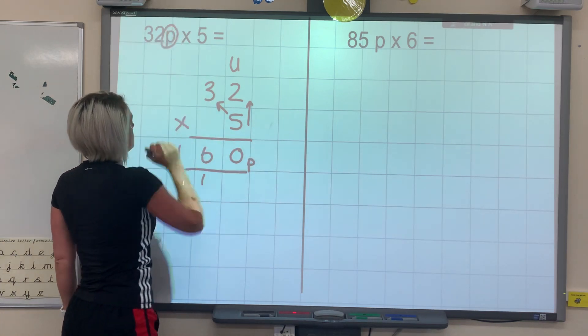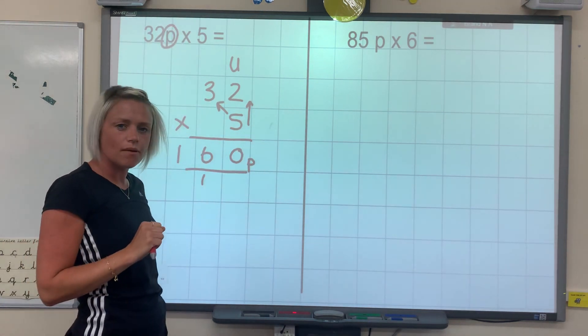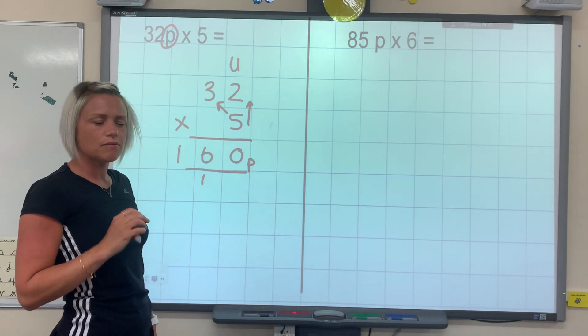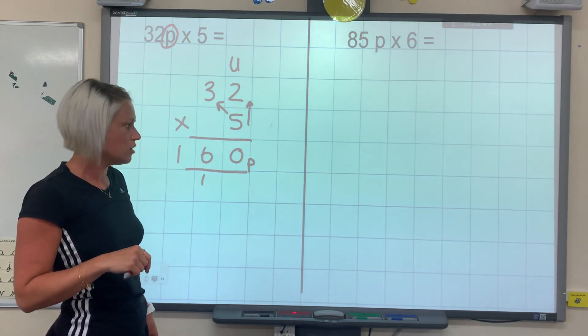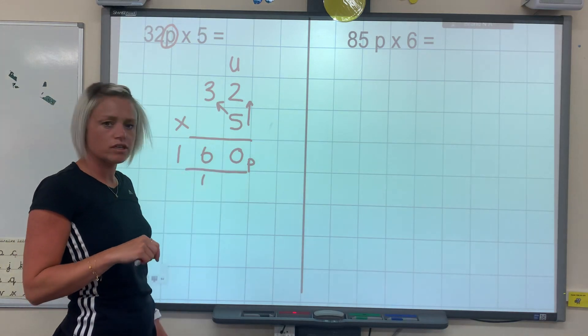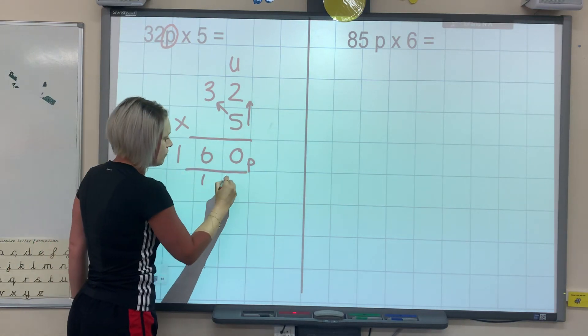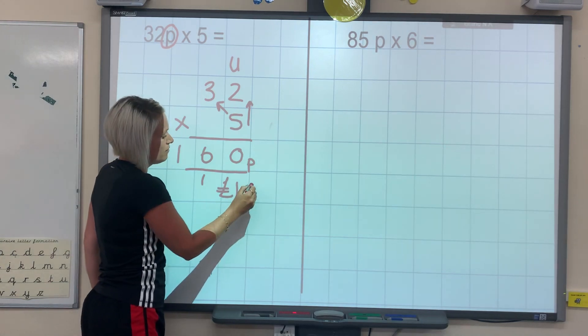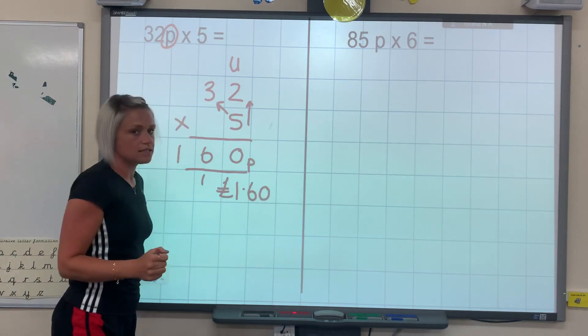Check my unit. Now can we convert that into pounds and pence? How many pounds? We've got 100 pence in a pound. We've got 160, so hopefully you've been able to realize that there's 1 pound and there's 60 pence.